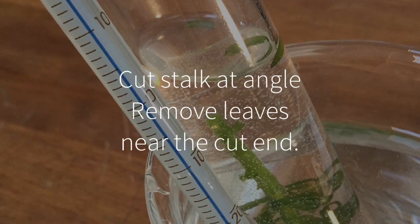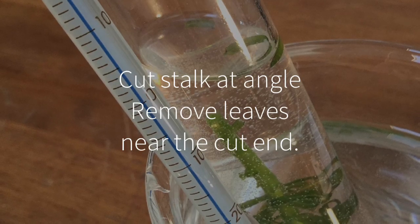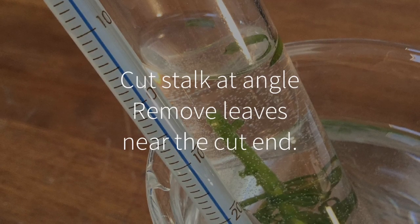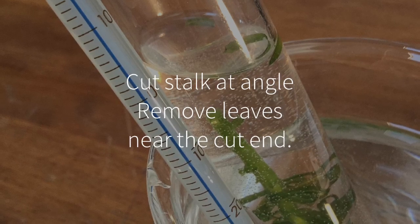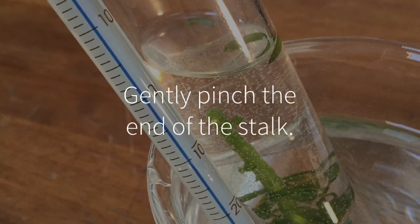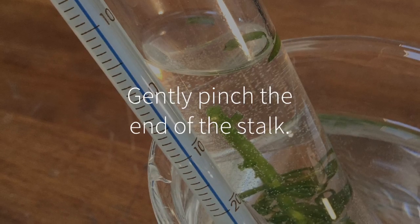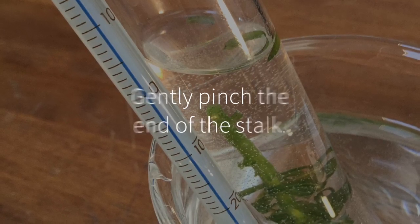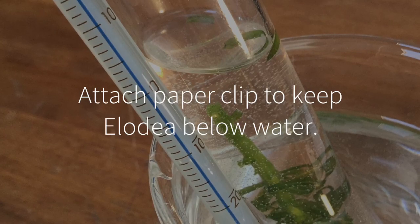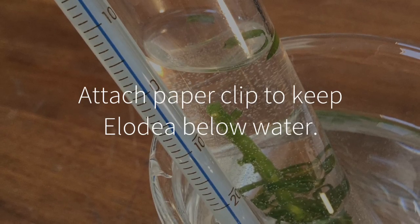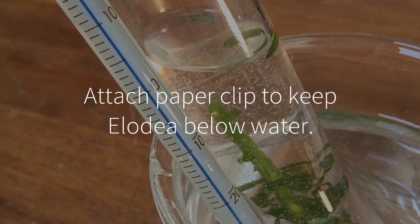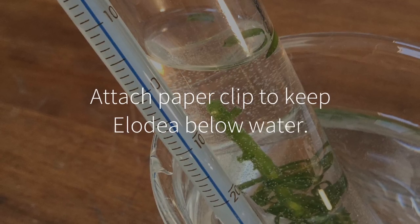Before all of this, we had to prepare the allodea for the practical. We cut a stalk at an angle and removed the leaves near the cut end. To ensure that we could visualize actual bubbles of oxygen being released, the stalk was pinched near the end. To ensure that our stalk remained well below the water level, a paper clip was gently attached to the leafy end just to weigh it down.